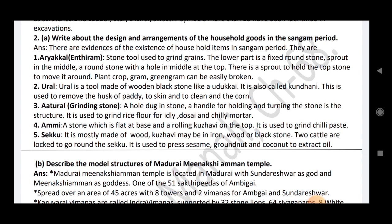Art Ural grinding stone: a hole dug in a stone, with a handle for holding and turning the stone, used to grind rice flour for idli, dosa and chili. The mortar Ammi: a stone with a flat base and a rolling kulavi on top, used to grind chili paste. Sekku: made of wood with a kulavi in iron, or black stone. Two cattles are locked into one round of chakku, used to press sesame, groundnut and coconut to extract oil.